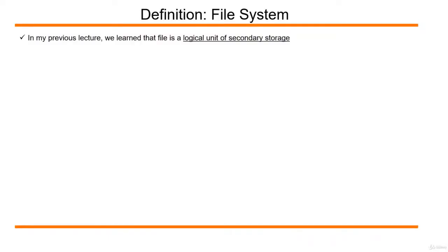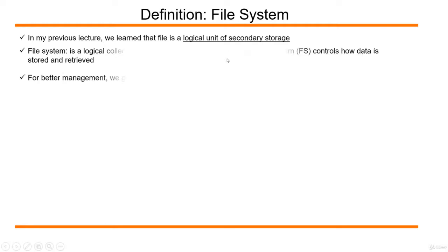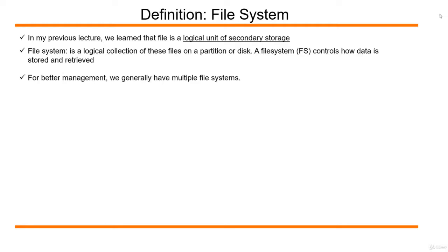In my previous lecture we learned about a file — a file is a logical unit of secondary storage. A file system is a logical collection of these files on a partition or disk. In short, we call it FS. It controls how data is stored in and retrieved from secondary storage.